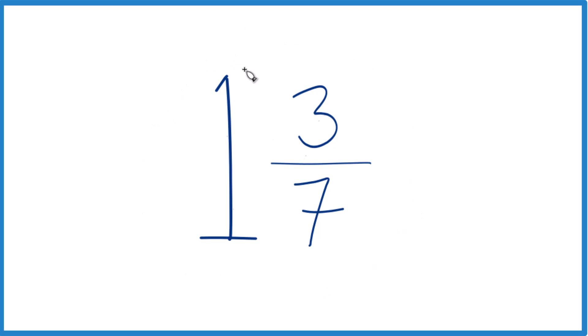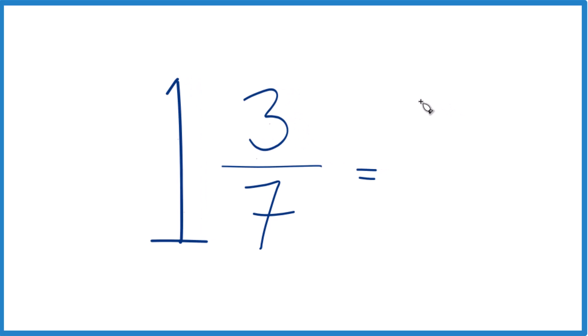You take the whole number, that's the 1, times 7. 1 times 7, that's 7, and then you add that to 3. 7 plus 3, that equals 10.